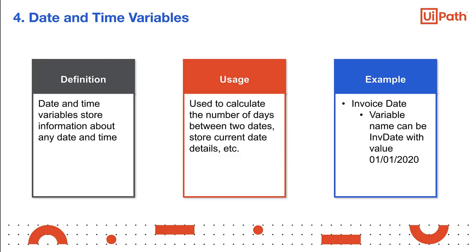The date and time variable is a type of variable that enables you to store information about any date and time, such as a variable today holds today's date. The main use of date and time variable is to store a specific date and time, or to perform other operations with them. They may be used to append dates to time-sensitive invoices or documents.